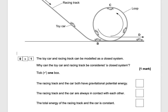If the racing car is coming down from up there it has gravitational potential energy, but then it has much lower gravitational potential energy because it's on the ground. Then it gains gravitational potential energy when it's at the top of the loop, and then comes back down to zero. So it can't be the first option because at some points the racing car doesn't have any gravitational potential energy.